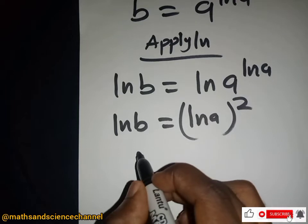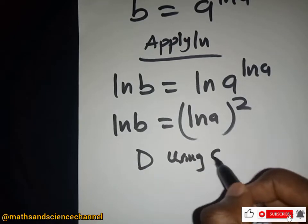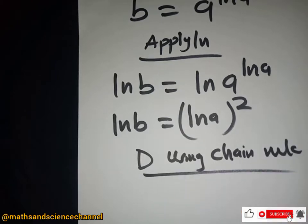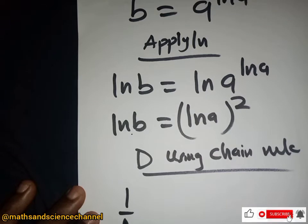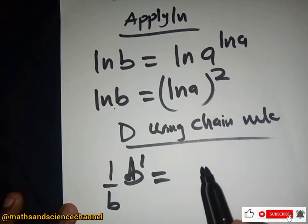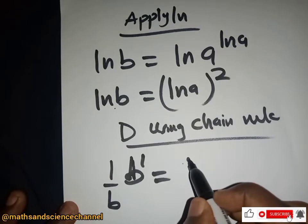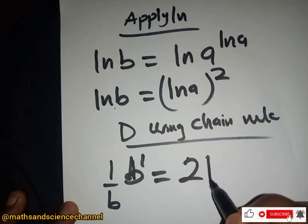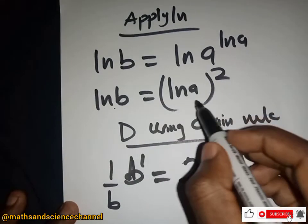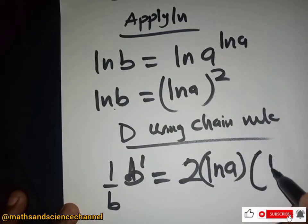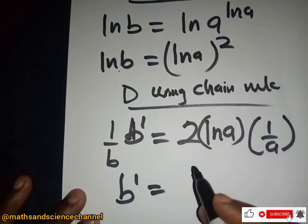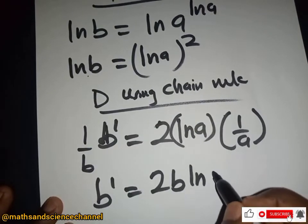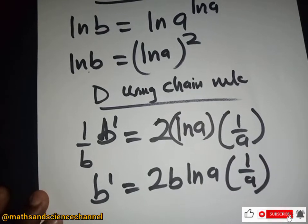Now we differentiate both sides using the chain rule. Differentiating ln b gives one over b times db, the differential of b. On the right side, differentiating (ln a)² gives 2 ln a, and then differentiating ln a again by the chain rule gives one over a.